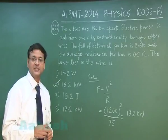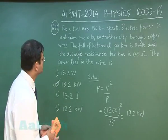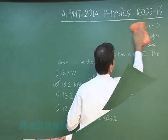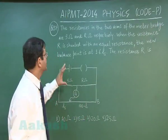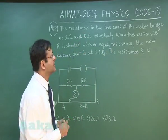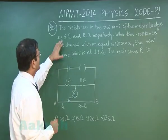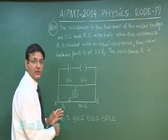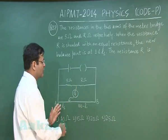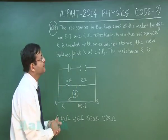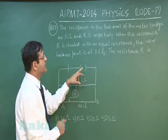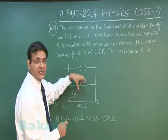Now let us discuss the next question, that is question 27. In the next question, the resistances in the two arms of the meter bridge - it's a question of meter bridge and direct application of the formula - 5 ohm and R ohm respectively. As it has been shown in the figure, you can see 5 ohm is here and R ohm is here. Naturally the balance lengths are also in the same proportion: 5/R will be L₁/(100-L₁). When the resistance R is shunted with an equal resistance, you see this resistance R is shunted, that means another resistance is connected in parallel.